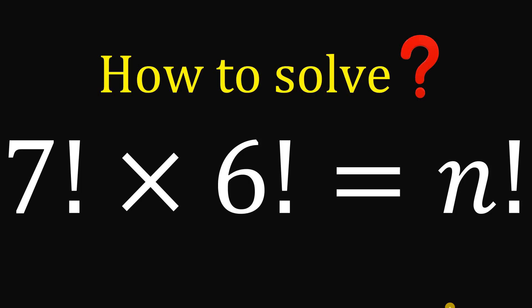For today's video, we will answer a math challenge given by one of our followers. The question goes like this: given the equation 7 factorial times 6 factorial equals n factorial, the question is how to solve for the value of n.